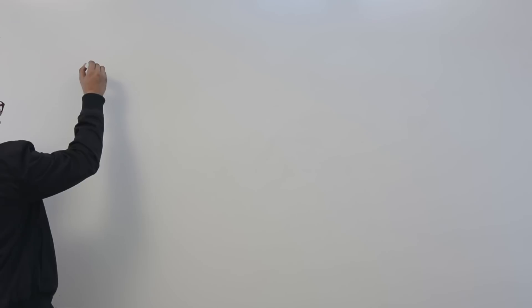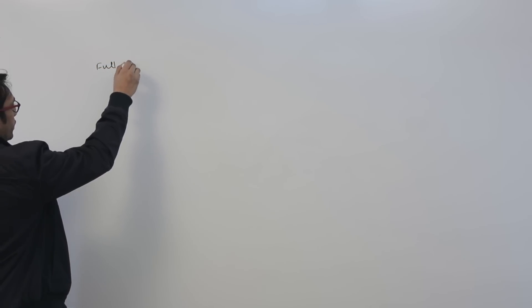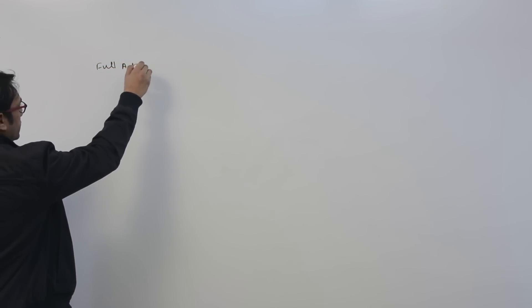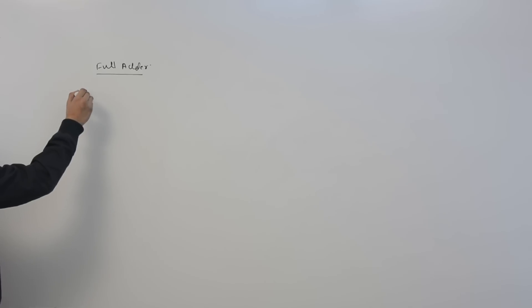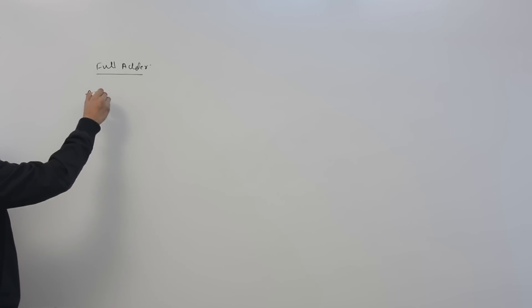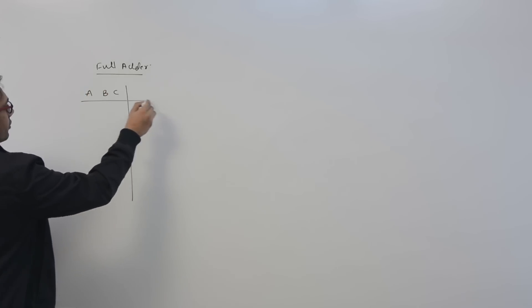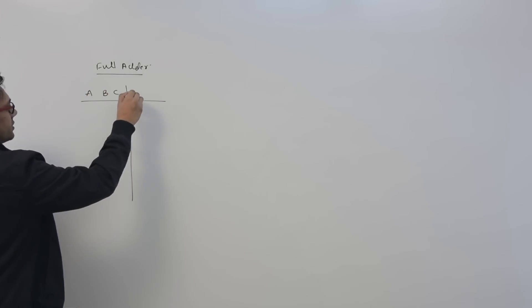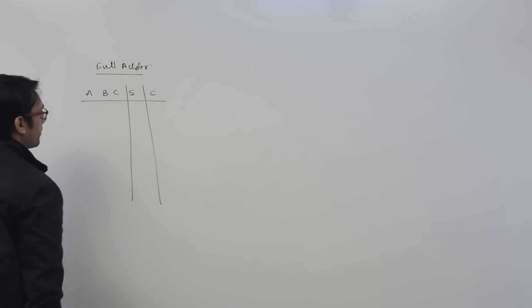Now let us identify the problems and remove them. We are going to make a full adder again. I'm sure we have already studied this but let me do it again. In a full adder, we are going to add three bits of information: a, b, and c. This is the sum and this is the carry.